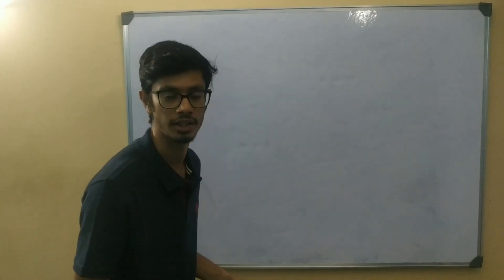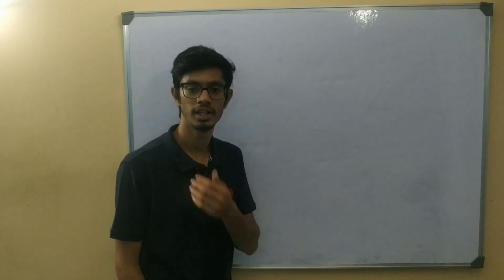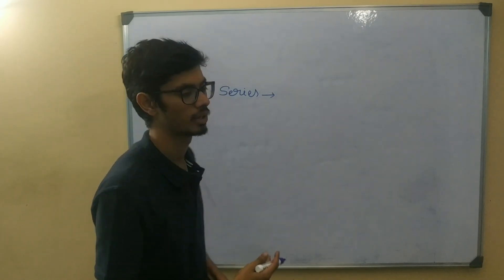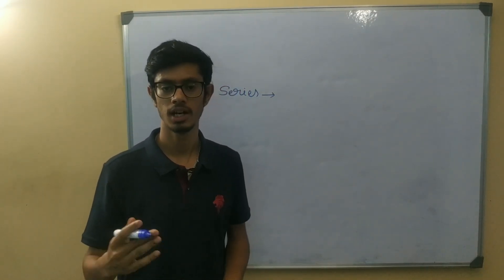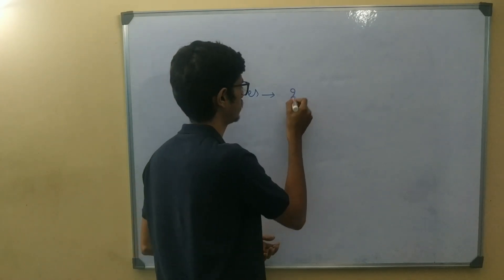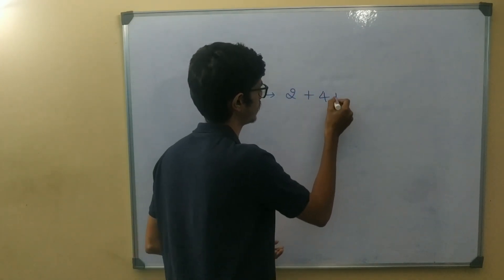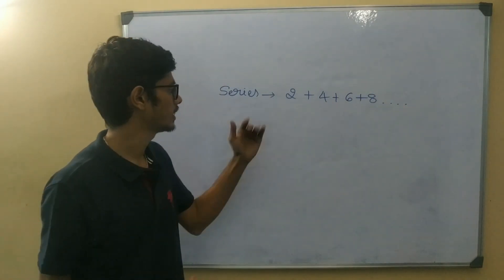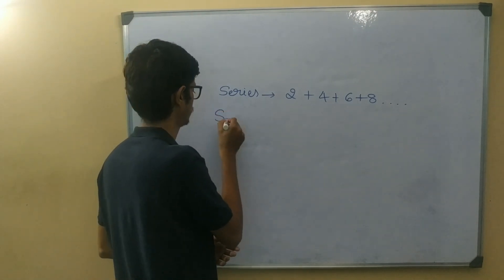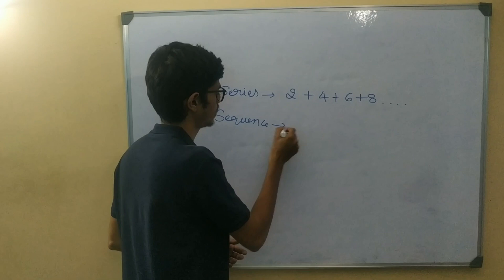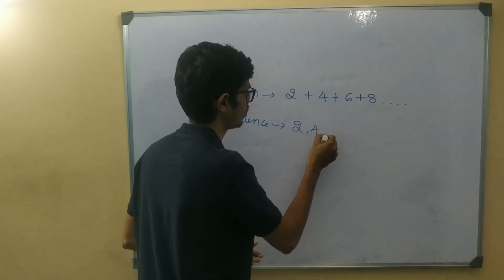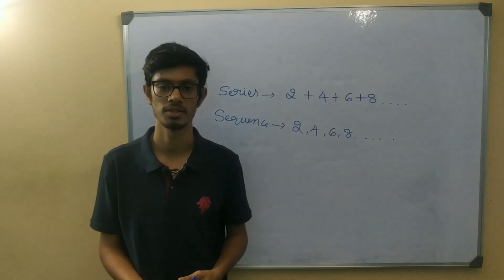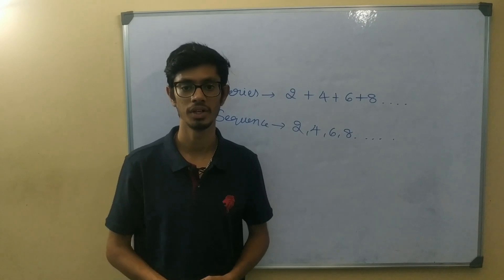Now let's look at series and sequence. A sequence is when you write the terms separated by commas — for example, 2, 4, 6, 8 and so on. A series is when you add those terms together with a plus sign — for example, 2 plus 4 plus 6 plus 8. That is the difference between a sequence and a series.